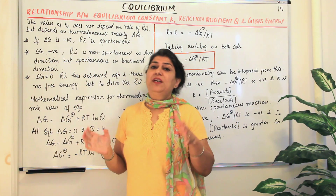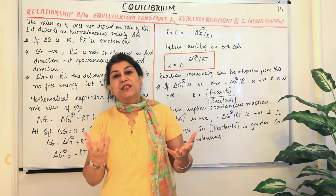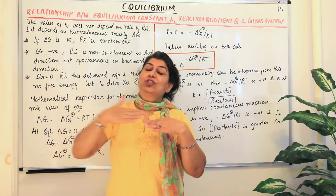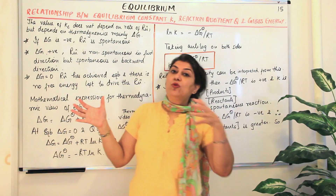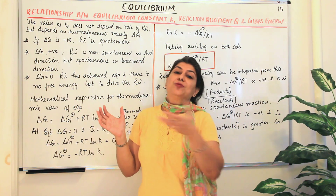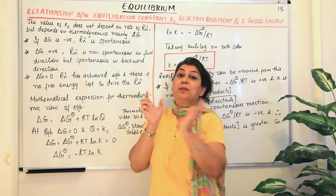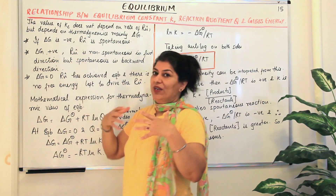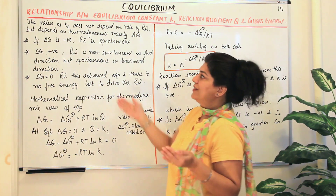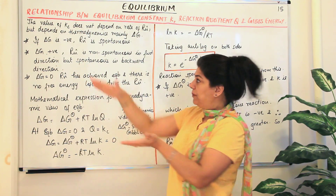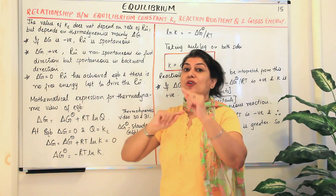If delta G is positive, the reaction is non-spontaneous. When talking of a reversible equilibrium reaction, spontaneity refers to the forward direction — whatever sign applies in the forward direction, the opposite sign applies in the backward direction. So if delta G is negative in the forward direction, the value would be positive in the backward direction. If delta G is positive, the reaction does not take place spontaneously in the forward direction, but the backward direction would be spontaneous.